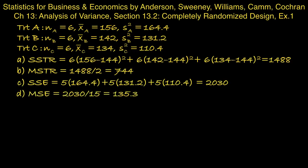Part D, compute the mean square due to error. Divide the sum of squares due to error by its degrees of freedom. And we obtain 135.3.